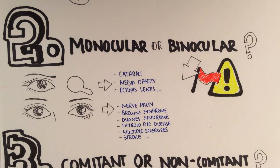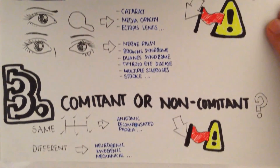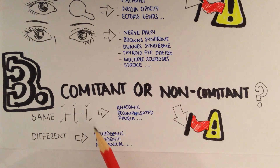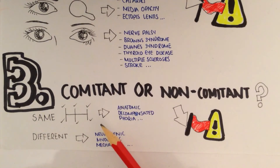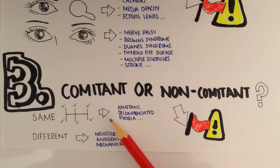The third and final question that we need to be asking ourselves is simply is this concomitant or non-concomitant diplopia? Are we getting double vision the same in all directions of gaze when we perform motilities? If we are, then we're not as concerned - this is our safe category. Essentially this is more likely to be anatomical, a decompensated phoria, or something with an accommodative influence.